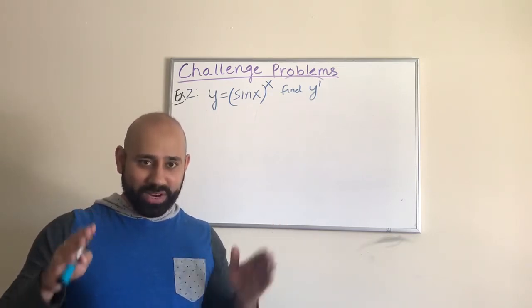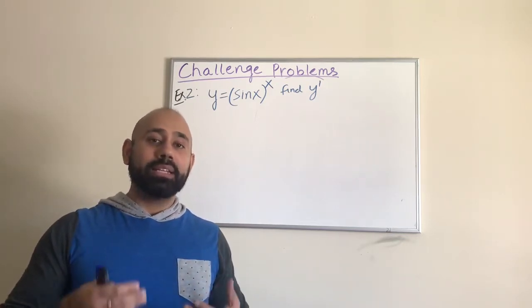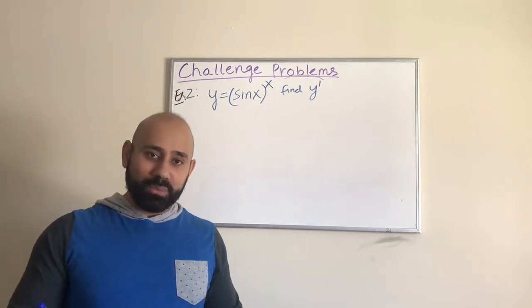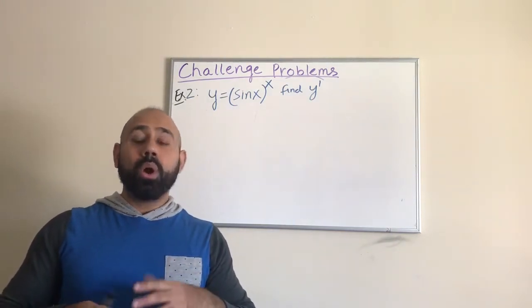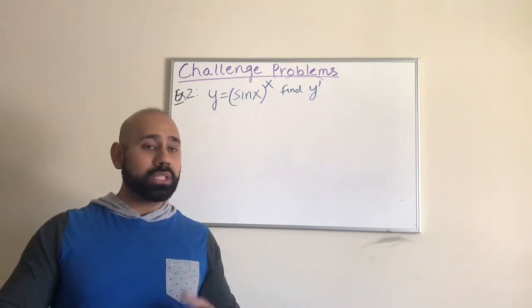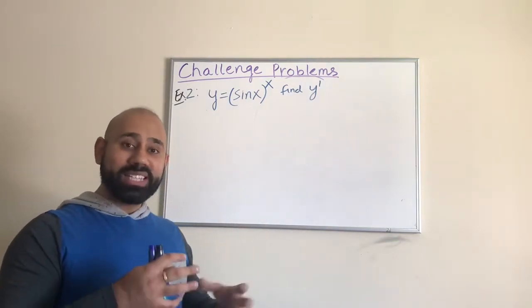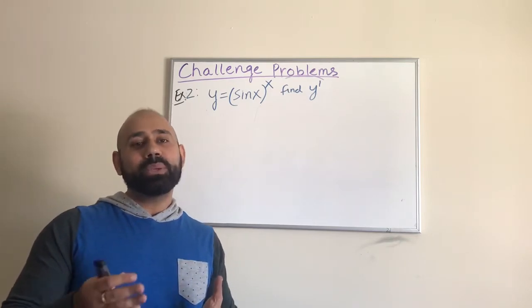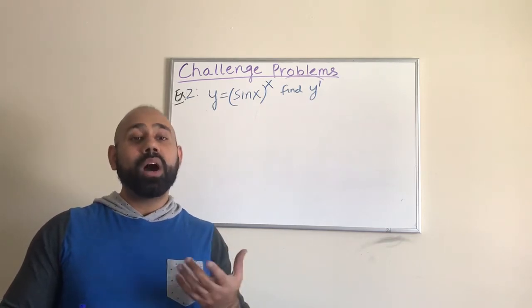We don't have any direct methods for writing the derivative of this function, so what we are going to do is apply the natural log on both sides. You can apply other logs as well, but it's easier to use the natural log. By applying the log on the right-hand side — if you already have an understanding of exponential functions and their inverses — we can simplify this transcendental function into something simpler that we know how to differentiate.